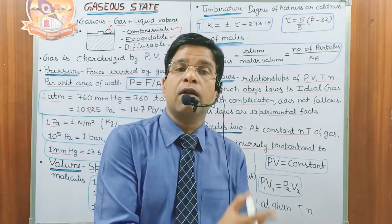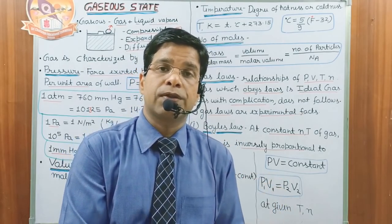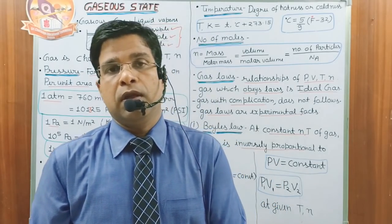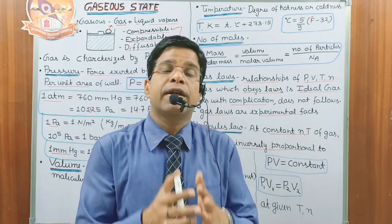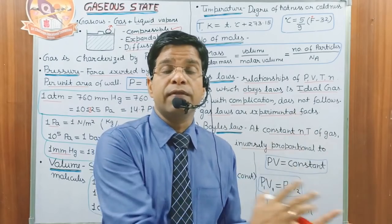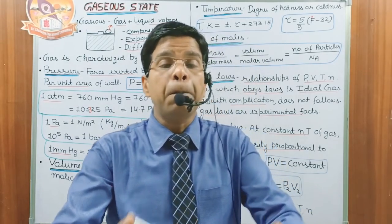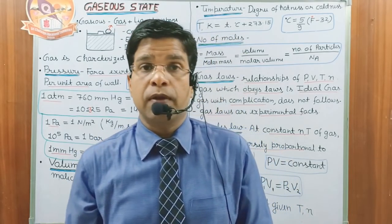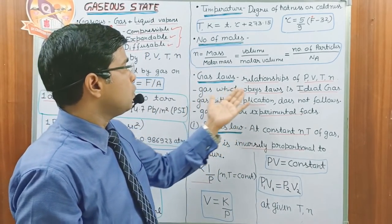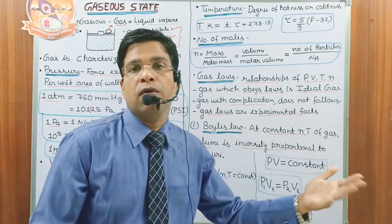Gases which show chemical complications upon changing pressure, volume, temperature, and number of moles cannot follow the gas laws. For example, NO₂ gas: if we decrease the temperature, NO₂ converts into N₂O₄. The chemical behavior has changed — NO₂ and N₂O₄ are chemically different. So any gas that shows a change in chemical behavior or chemical complication under changing P, V, T, and N cannot follow the ideal gas laws.